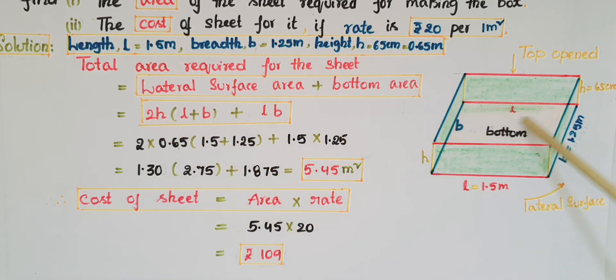So here the values are: 2 into h is 65 centimeters, that means 0.65 meters. So 2 × 0.65 × (l + b), which is 1.5 + 1.25, plus l × b, which is 1.5 × 1.25.